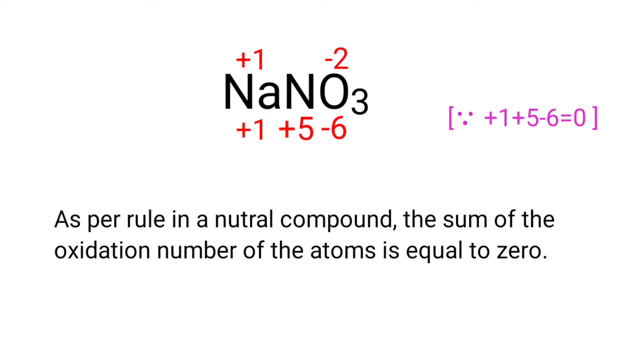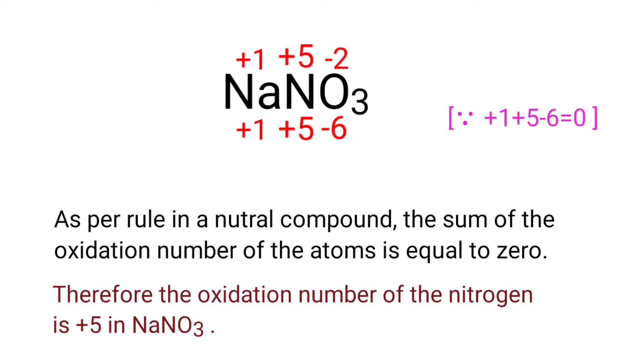So we can write the oxidation number of nitrogen is plus 5. Therefore, the oxidation number of nitrogen is plus 5 in NaNO3.